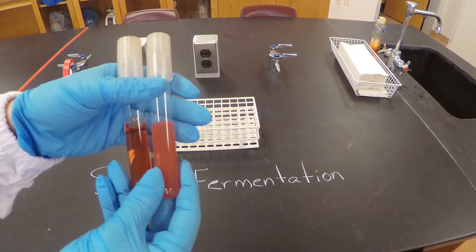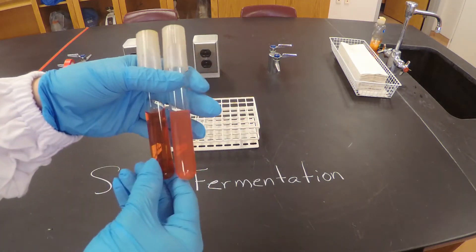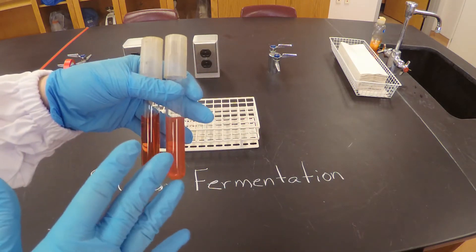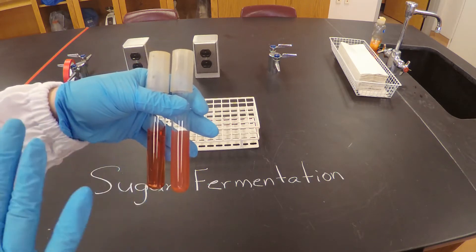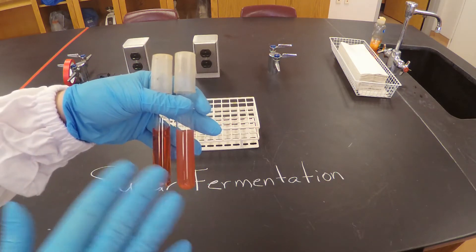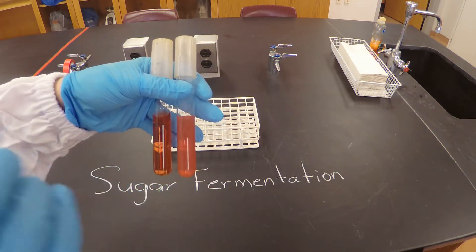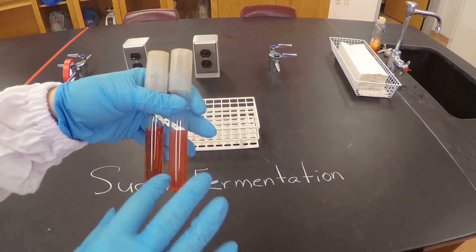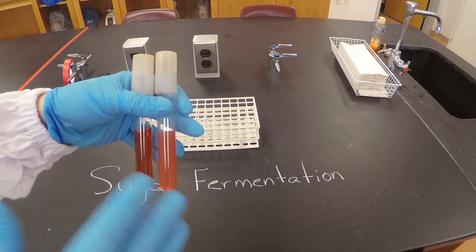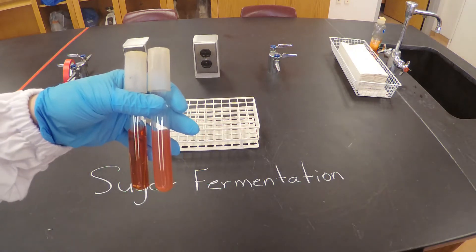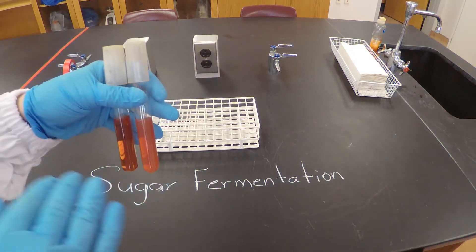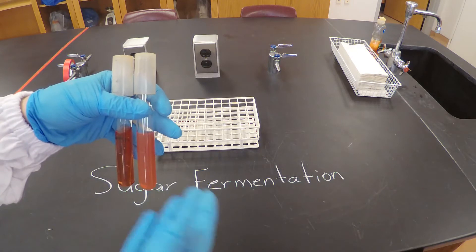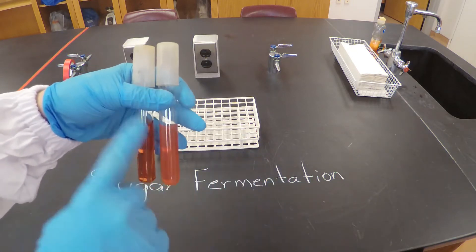To summarize: if when you add the bacteria the media stays red to pinkish color, that means that the bacteria were unable to use the sugar. If after you add the bacteria the media turns yellow, that means that there was fermentation, the environment turned acidic, and the bacteria were able to use the sugar.